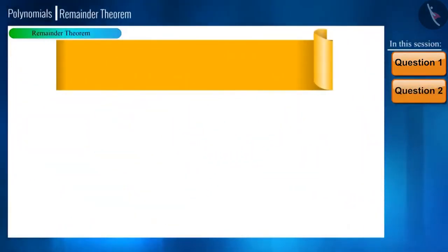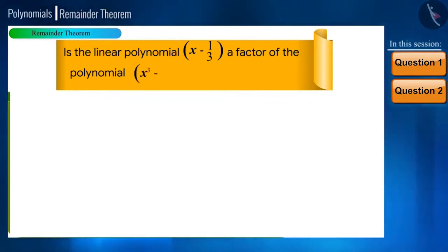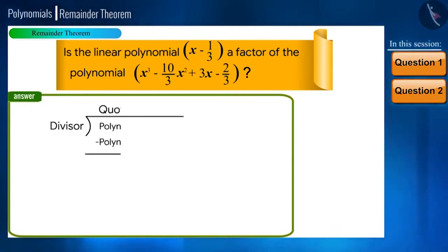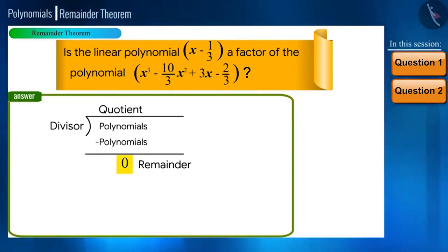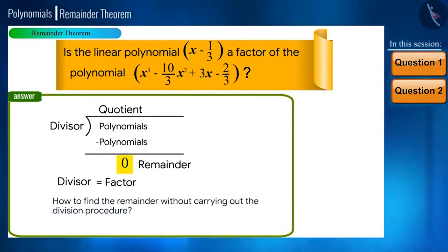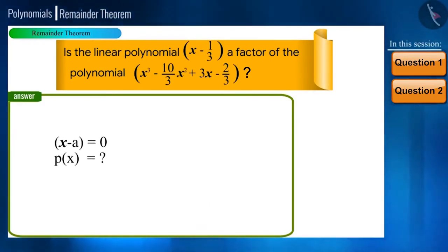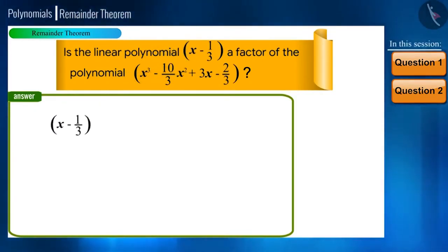Now let's move to the second question. State whether the linear polynomial x minus 1/3 is a factor of the polynomial x cubed minus 10/3 x squared plus 3x minus 2/3. If on dividing the two polynomials we get the remainder as 0, then we can say that the linear polynomial is a factor of the given polynomial. But how to find the remainder without carrying out the division procedure? We can — if we equate the linear polynomial with 0, we will get the value for x, and on substituting that value into the given polynomial, we can determine the remainder.